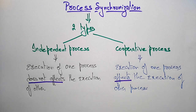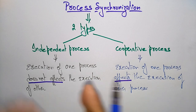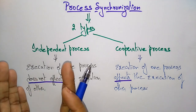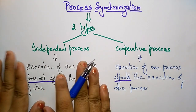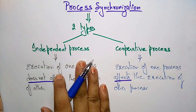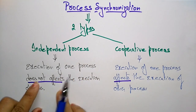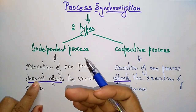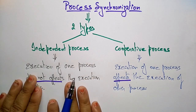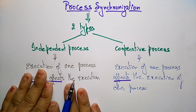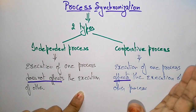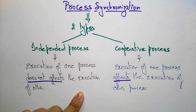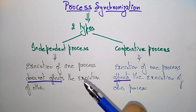Process synchronization arises only in the case of cooperative processes. In independent processes, there is no dependency relationship between one and another process, so a synchronization problem does not arise — each process is independent and not sharing resources, each has its own resources. Whereas in cooperative processes, synchronization arises because resources are shared.